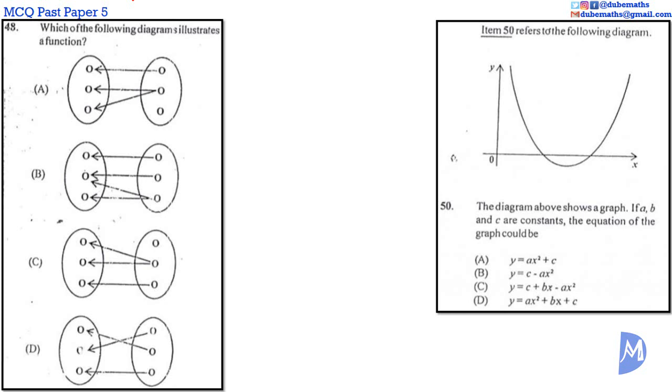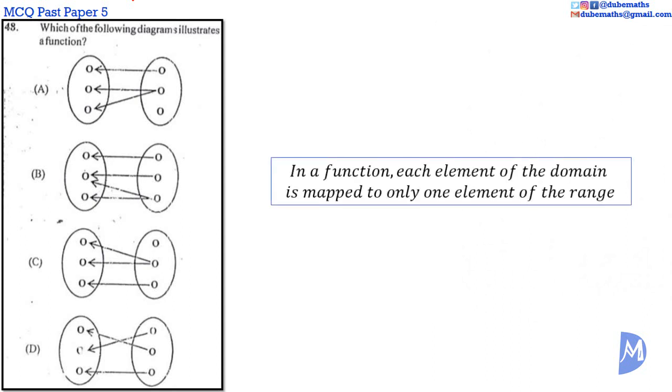Okay, let's go. Question 48. In a function, each element of the domain is mapped onto one and only one element of the range. This means that only one arrow leaves each element of the domain.